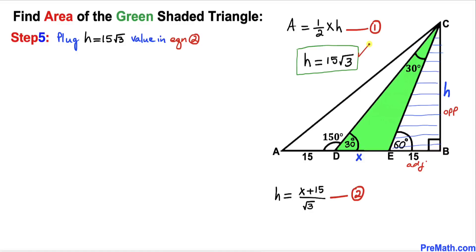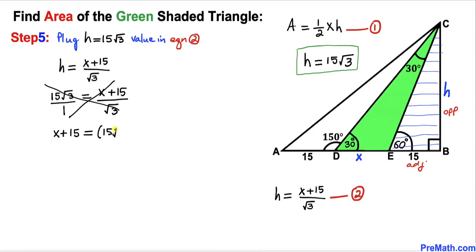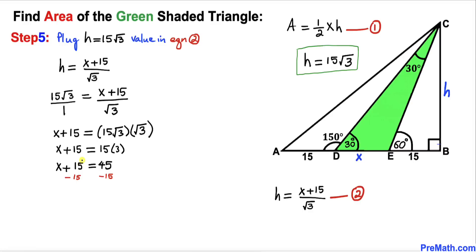Now let's plug H equals 15 times square root of 3 into equation 2. We get 15 times square root of 3 equals (X plus 15) divided by square root of 3. Cross-multiplying gives X plus 15 equals 15 times square root of 3 times square root of 3, which equals 45. Subtracting 15 from both sides, our X value turns out to be 30.